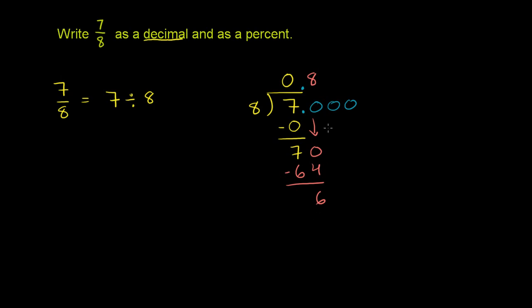Well, you still have a remainder. So let's keep going. Let's bring down another 0. So you bring down another 0 right over there. And so you say, how many times does 8 go into 60? Well, 8 times 8 is 64, so that's too big. 8 times 7 is 56, so that'll work. So it goes into 60 7 times. 7 times 8 is 56. You subtract. 60 minus 56 is 4.